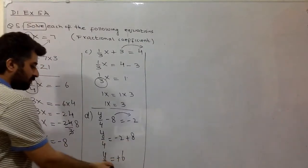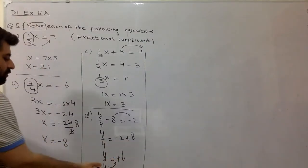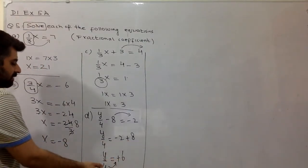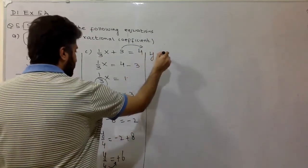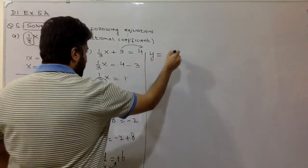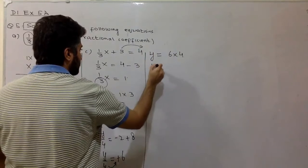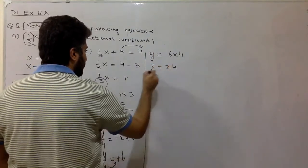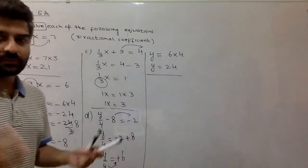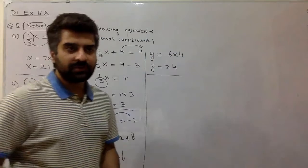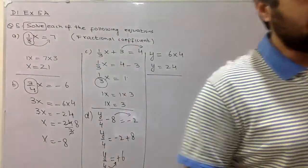Now move this 4 to the right side. The 4 is dividing y, so on the right side it will be multiplied by 6, giving 24. So the value of y is 24, which is the variable we needed to find.